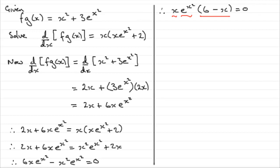So what we've got now is essentially three factors. x is one factor being multiplied by the second factor, e to the x squared, being multiplied by this third factor, 6 minus x, and equals 0. So that means that one or more of these three factors must equal 0. Well, what could it be? Well, we could have x equaling 0. So we could have, therefore, x equals 0.